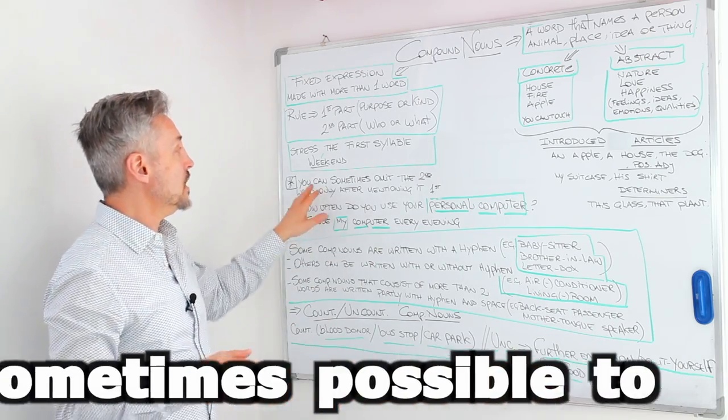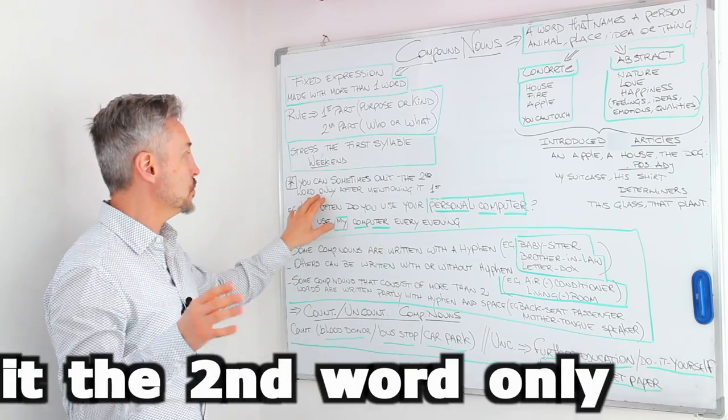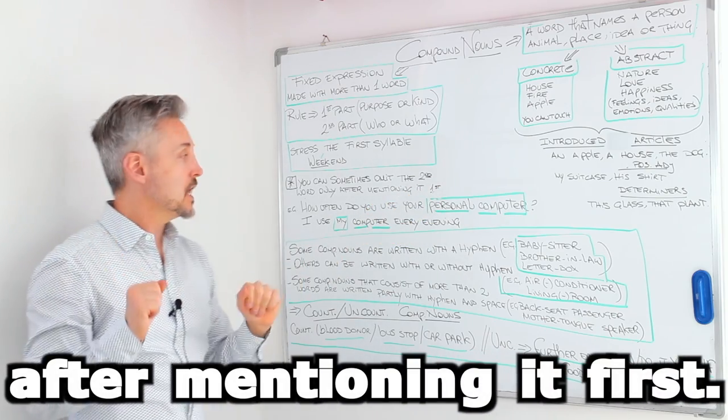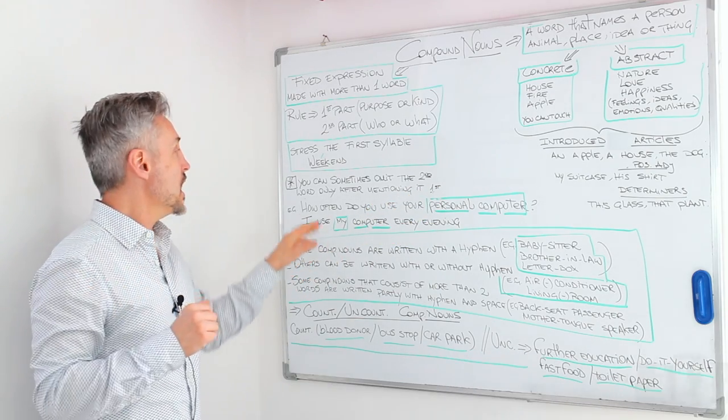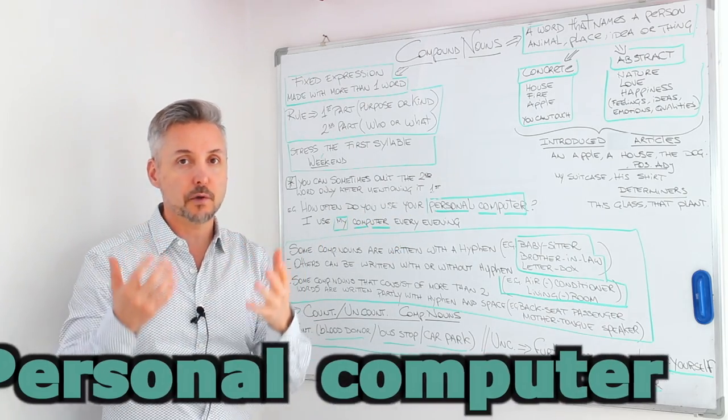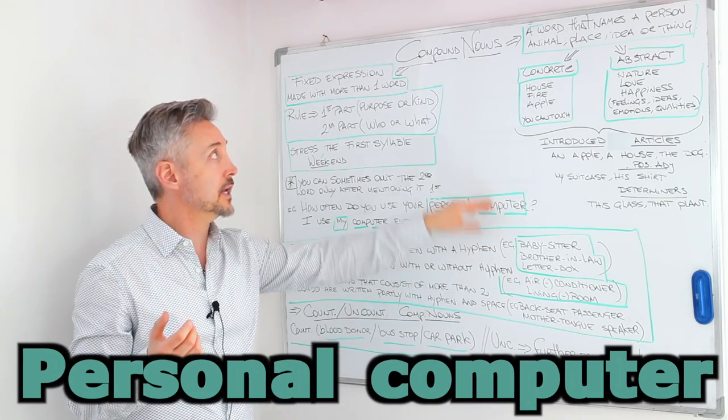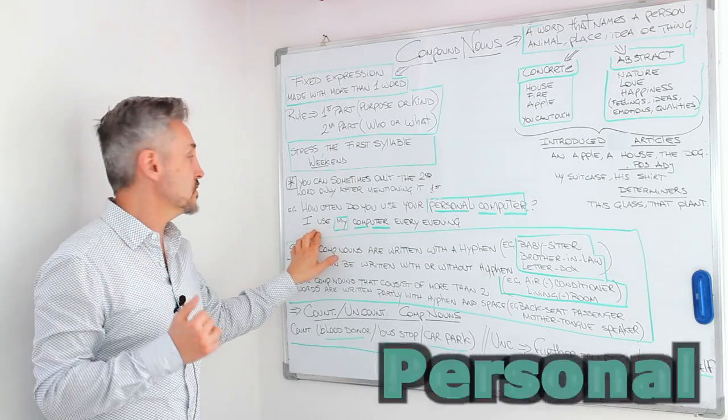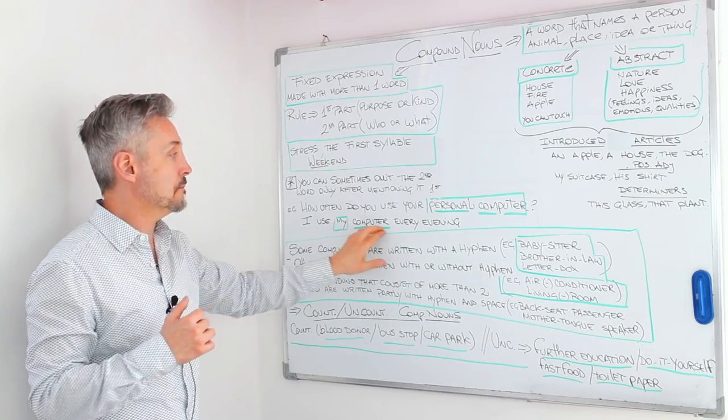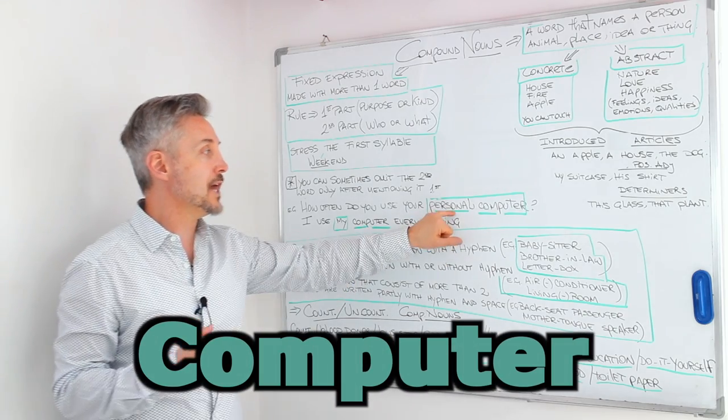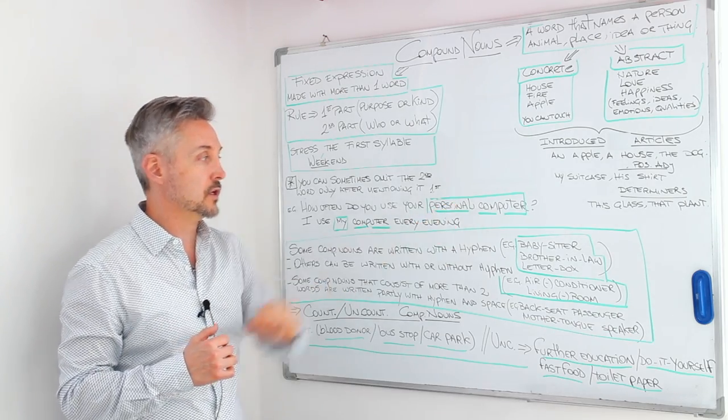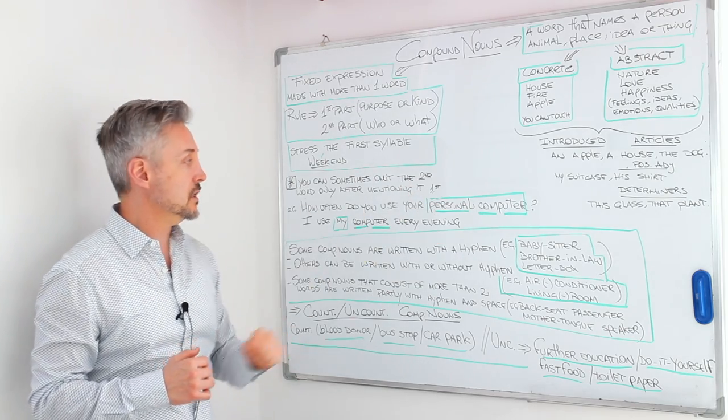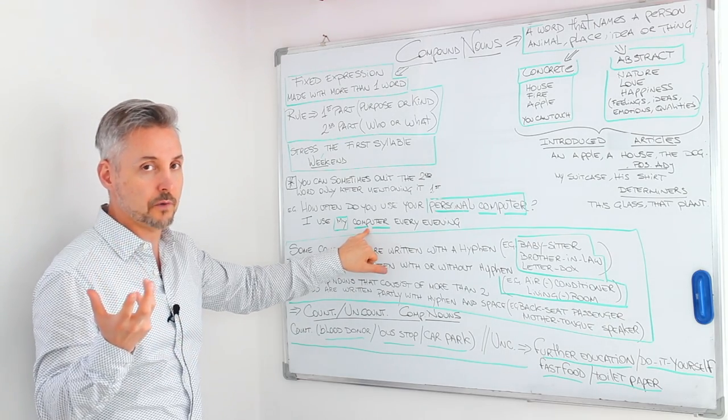And you can sometimes omit the second word only after mentioning it first. So, for example, how often do you use your personal computer? Personal computer here is the compound noun, right? And I can answer, I use my computer every evening, so I don't need to mention personal, right? So, I just omit personal and I just mention the computer.